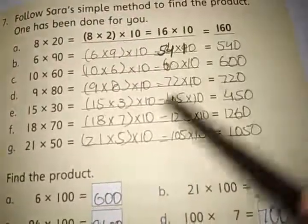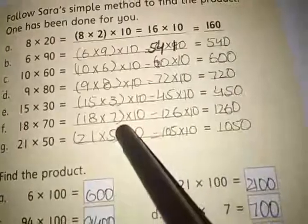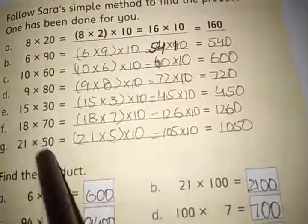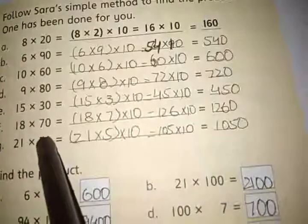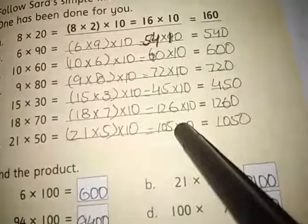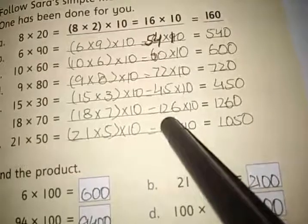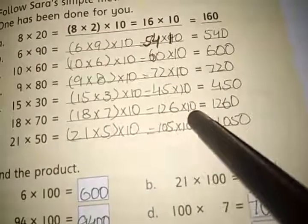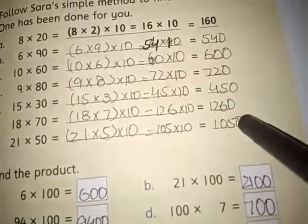Number F is 18 multiplied by 70. First 18 will be multiplied by 7 because 7 is on 10th place. 18 sevens are 126. Then 126 will be multiplied by 10 and is equal to 1260.